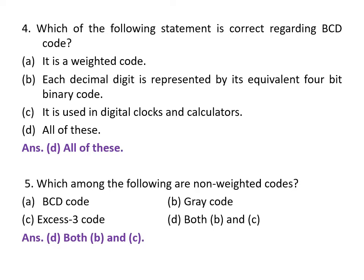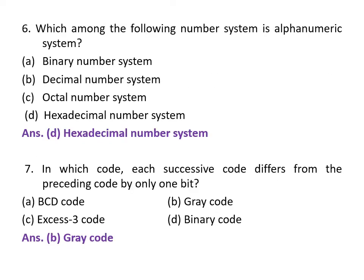Which among the following are non-weighted codes? A. BCD code, B. Gray code, C. Excess-3 code, D. Both B and C, that is Gray code and Excess-3 code. And the correct answer is, non-weighted codes are both Gray code and Excess-3 code, that is D option.